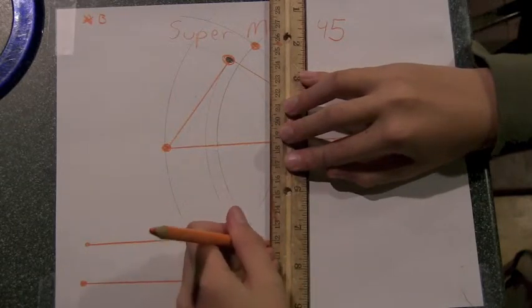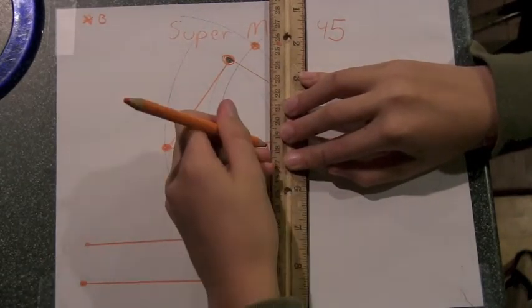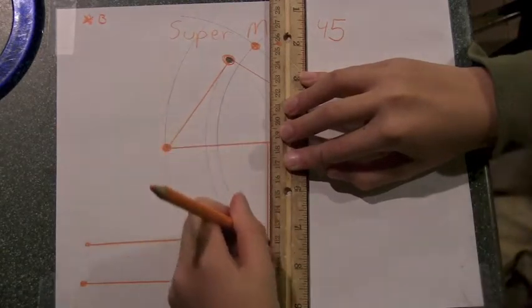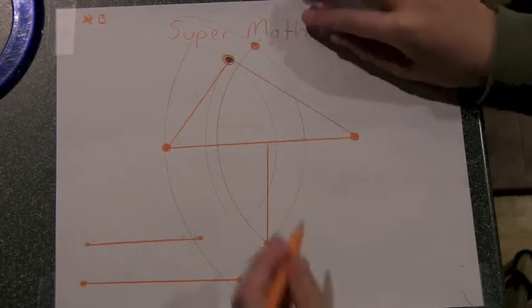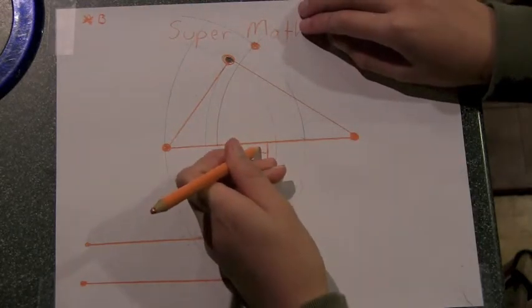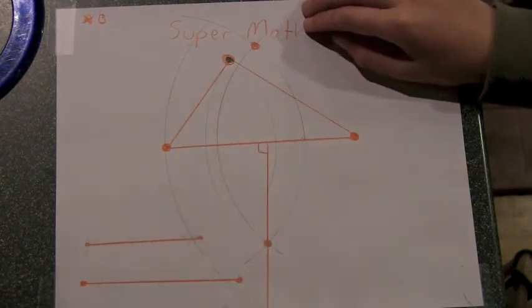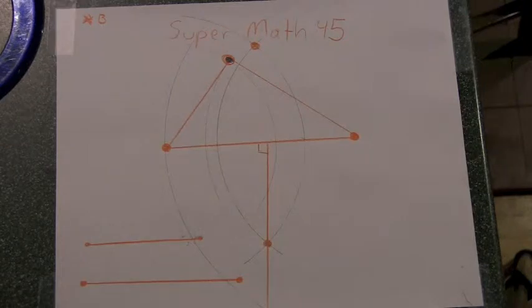And draw it all the way down to the bottom of the paper. Okay. So there's our perpendicular bisector. And what property did that perpendicular bisector have? Well. In fact, what property do all perpendicular bisectors have?